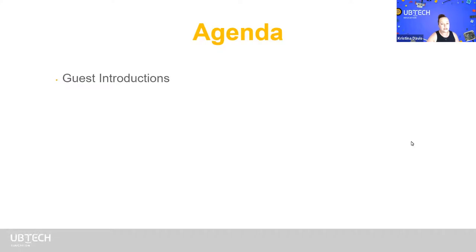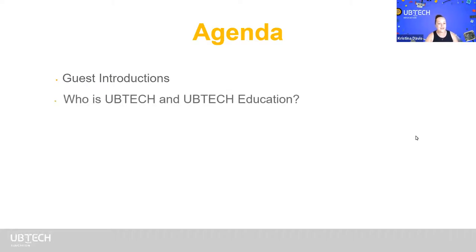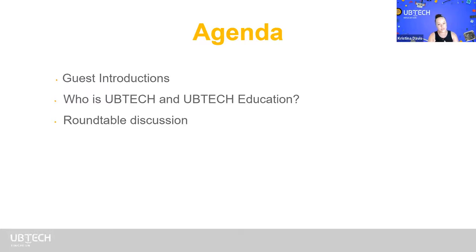Our agenda today is super short. We'll do guest introductions — we've got some new faces today since Rusty is at a school doing a workshop. Then I'll tell you a bit about UBTech Education. We're changing up our format this time: it's a roundtable discussion. I'll ask one question for all panelists to answer together, then individual questions, then a final group question. We'll save audience questions for a Q&A at the very end, and I'll also tell you about next month's webinar.